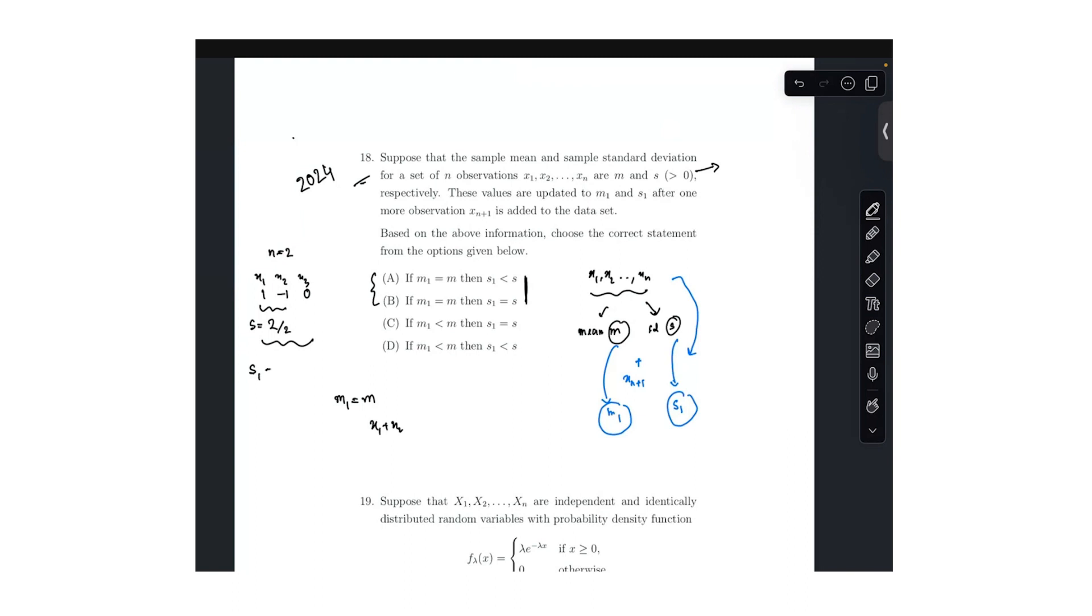And in this case, it's turning out to be two by three, because one square plus minus one whole square plus zero square by three minus the mean, which is zero square mean square. So hence this is S is greater than S one. One is greater than two by three.